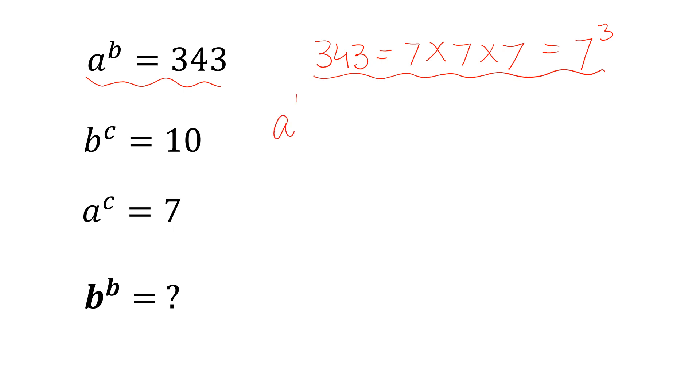Now we write a to the power of b equals 343. We can write a to the power of b equals 7 to the power of 3. From here, we can substitute 7 equals a to the power of c.